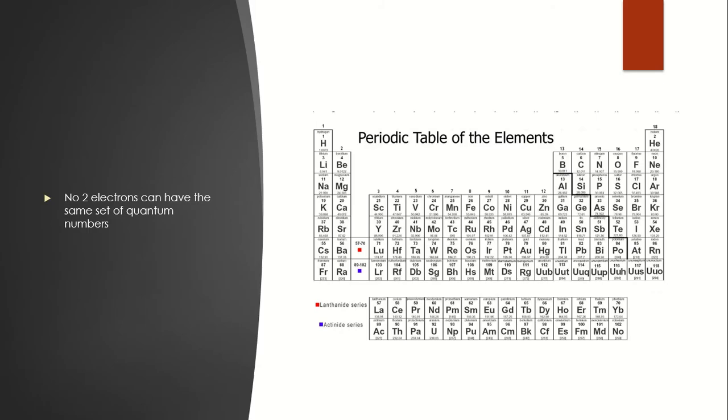So the Pauli Exclusion Principle states that no two electrons are going to have the same set of quantum numbers.